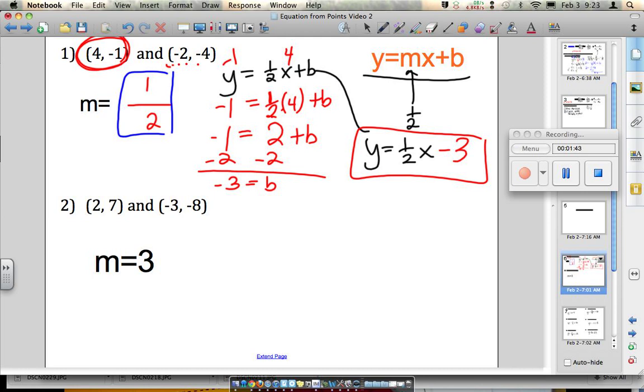Let's take a look at number two. I'll get you started, but I want you to try and finish on your own. So remember, we found the slope yesterday was three. So now we're going to plug that into our equation, three x plus b.